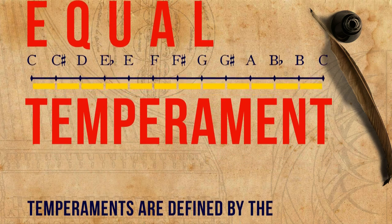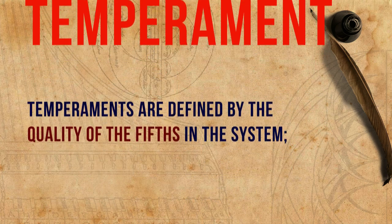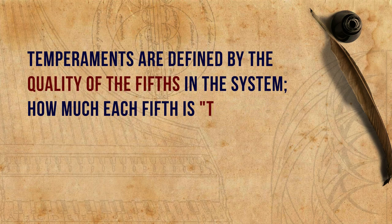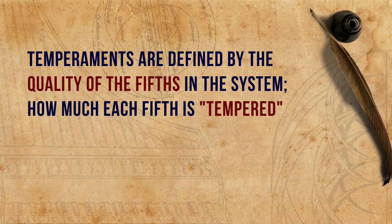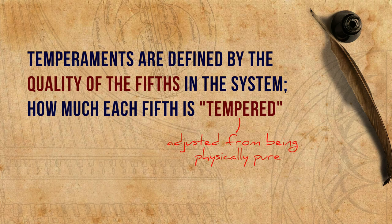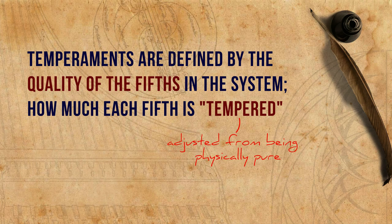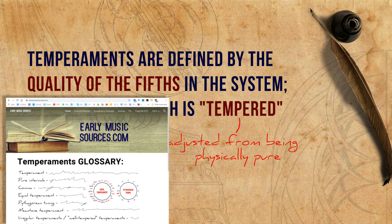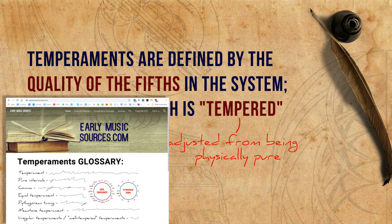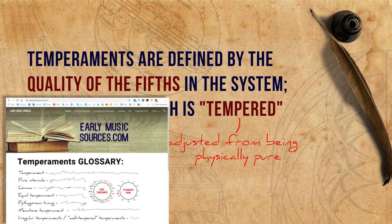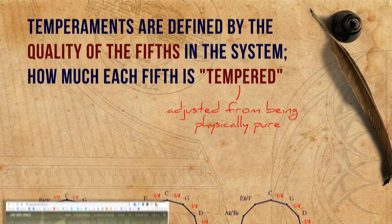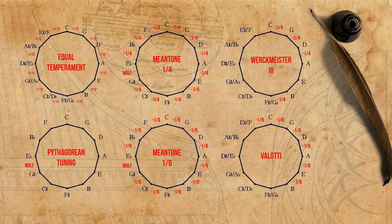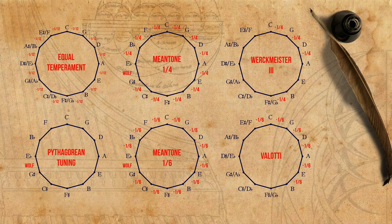Traditionally, temperaments are defined by the quality of the fifths in the system — how much each fifth is tempered, adjusted from being physically pure. Check the glossary on our footnote page to read what it means for an interval to be physically pure. Often, temperaments are represented in circles, in which the quality of each fifth is indicated.